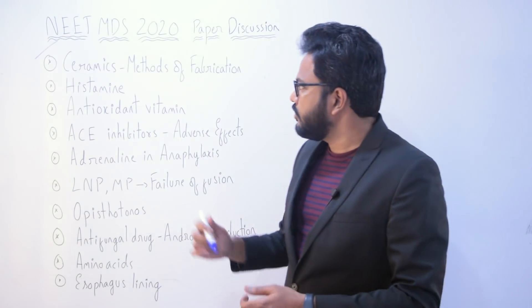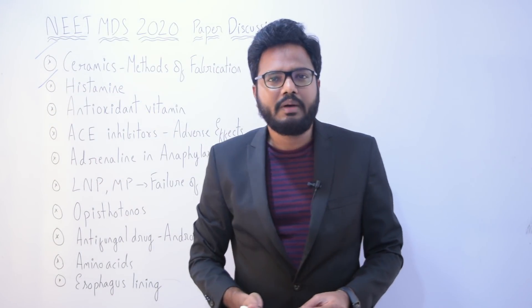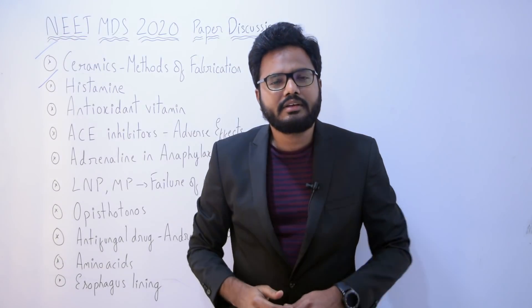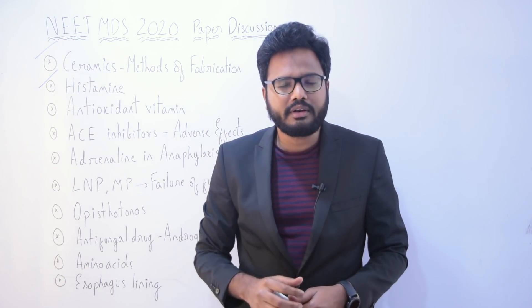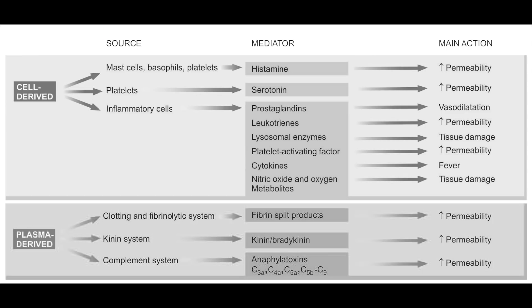Now let's move on to the next question: histamine is released by which of the following? Various chemical mediators of inflammation are very important and histamine is one such important mediator. Histamine is stored in granules of mast cells, basophils and platelets, and is released from these cells by various agents.